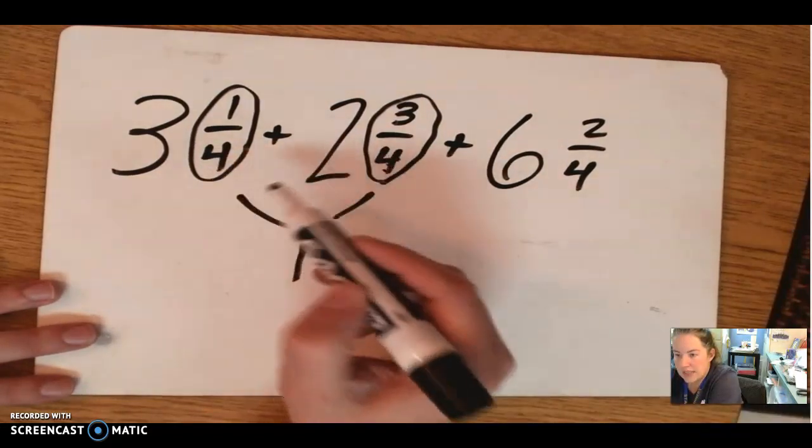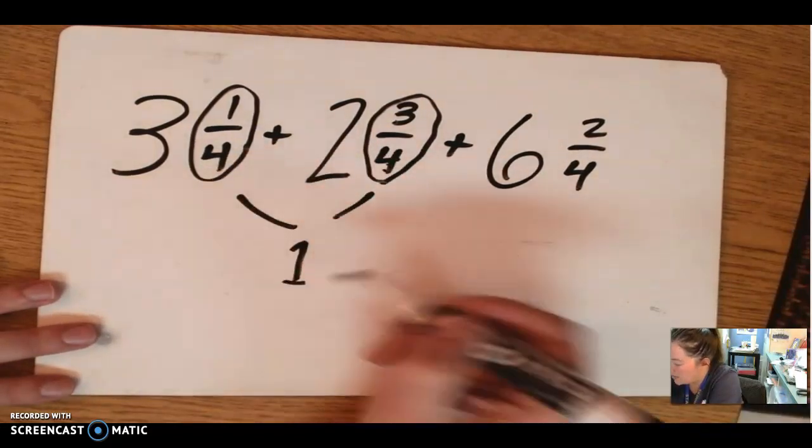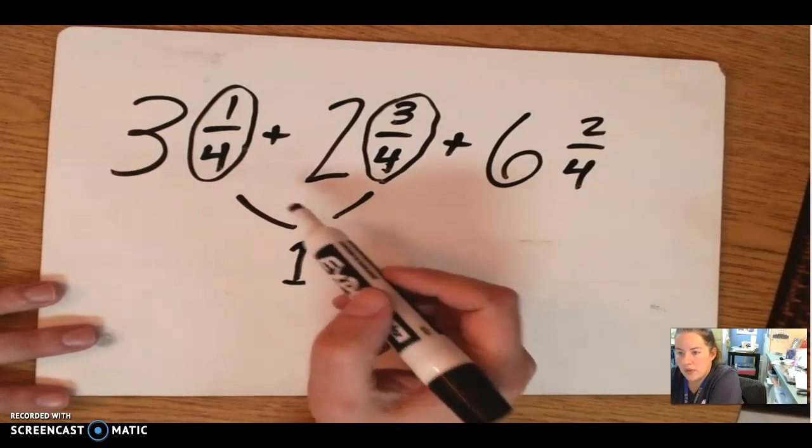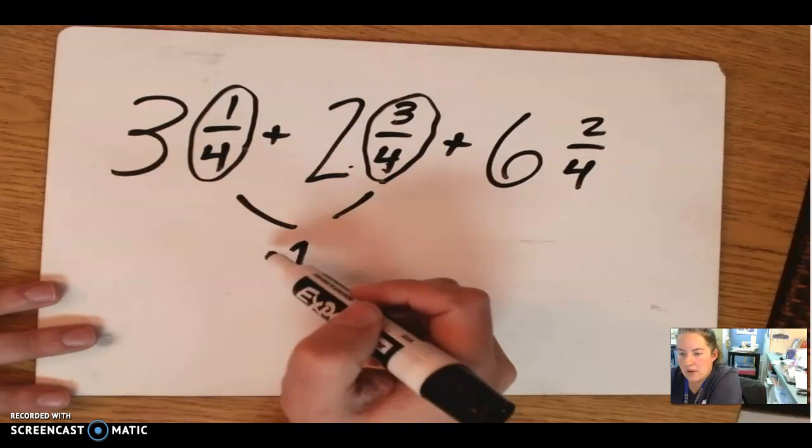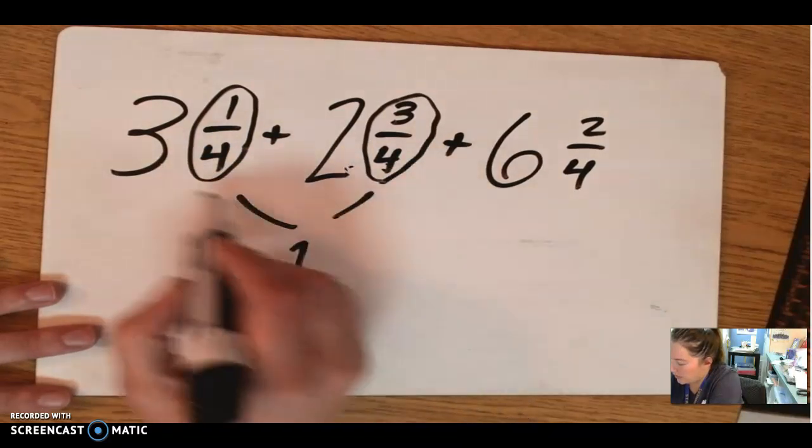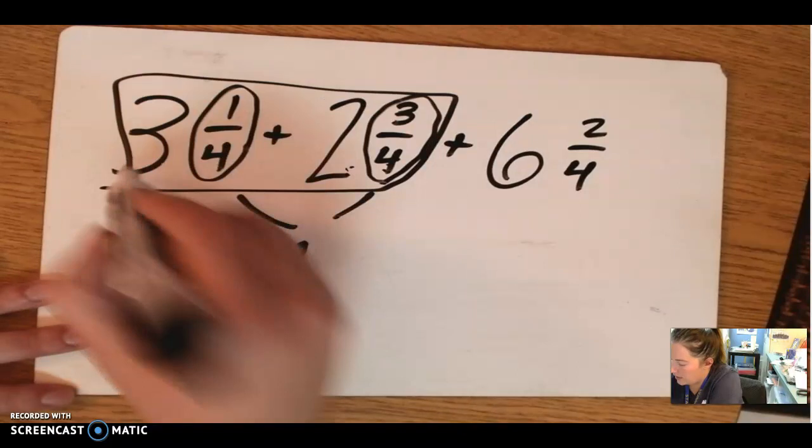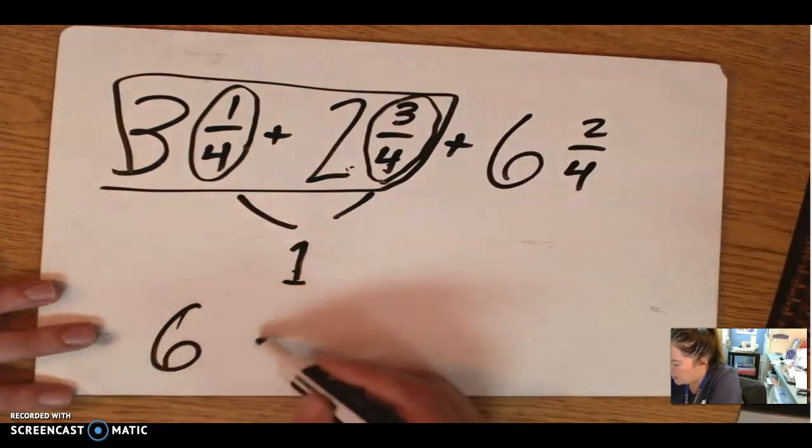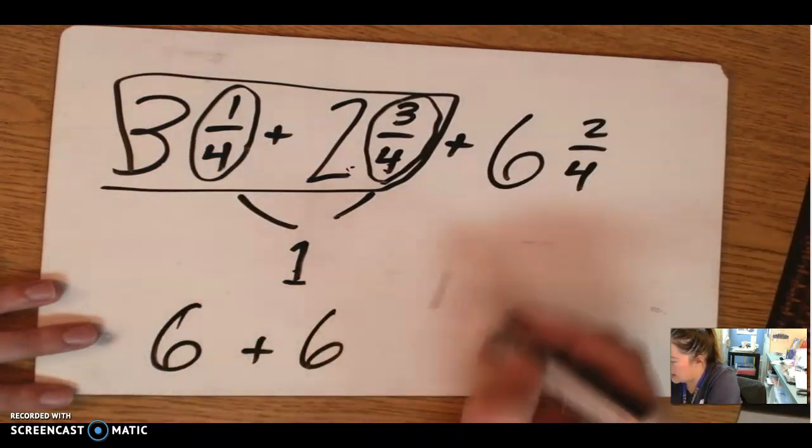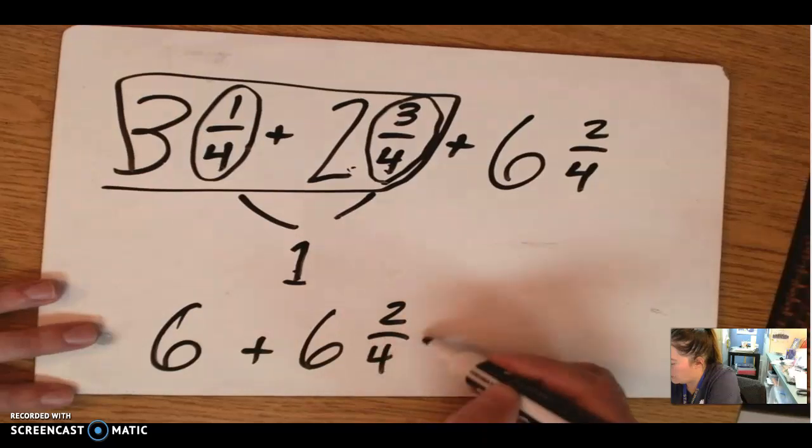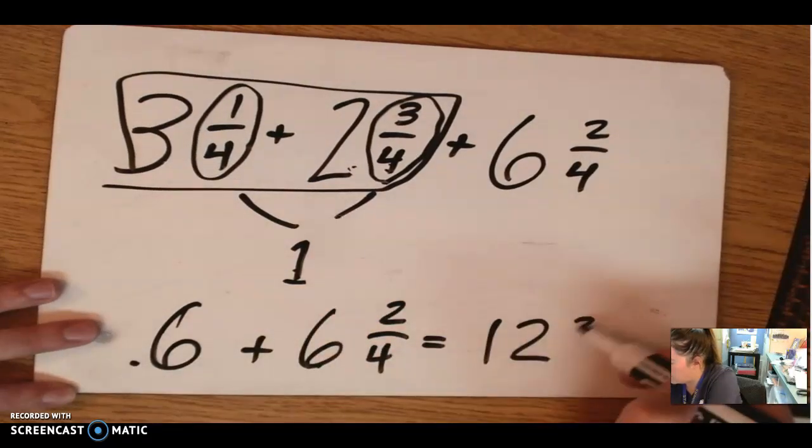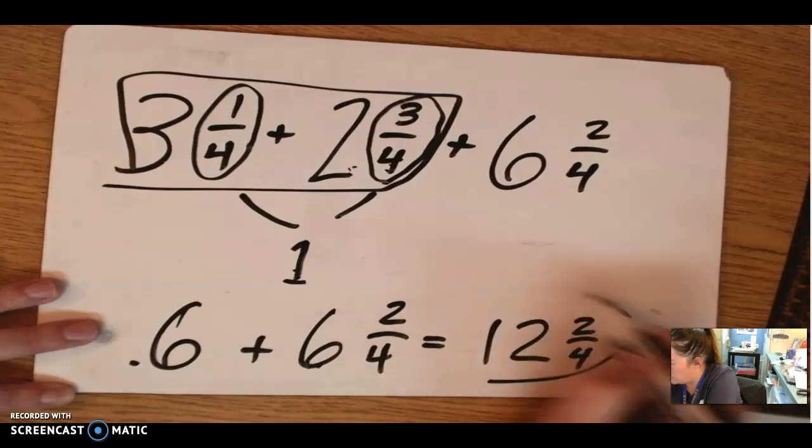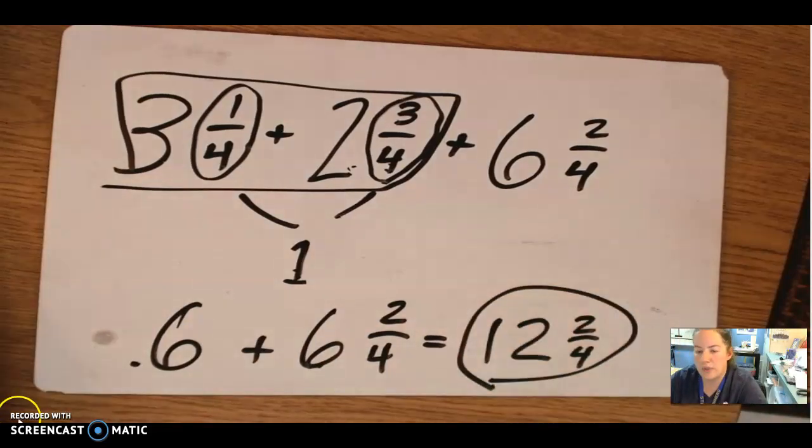1 fourth and 3 fourths is the same as 4 fourths, which is a whole. So now I have 3, 4, 5, 6. So this whole section right here is equal to 6 wholes plus, add this last one, 6 and 2 fourths. So my answer should be 6 plus 6 is 12, and keep the fraction 2 fourths, so 12 and 2 fourths.